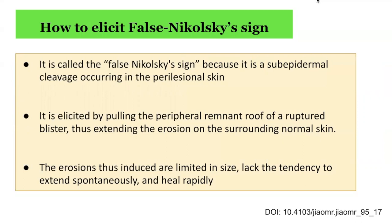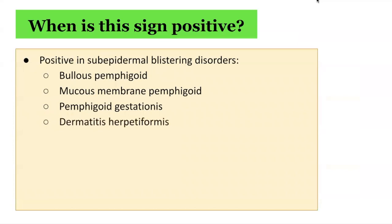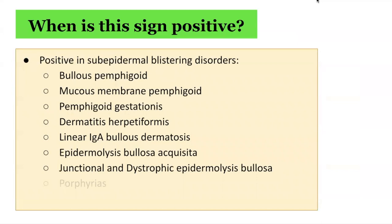When is this sign positive? The false Nikolsky sign is positive in subepidermal blistering disorders. These include bullous pemphigoid, mucous membrane pemphigoid, pemphigoid gestationis, dermatitis herpetiformis, linear IgA bullous dermatosis, epidermolysis bullosa acquisita, junctional and dystrophic epidermolysis bullosa, porphyrias, and bullous lupus.